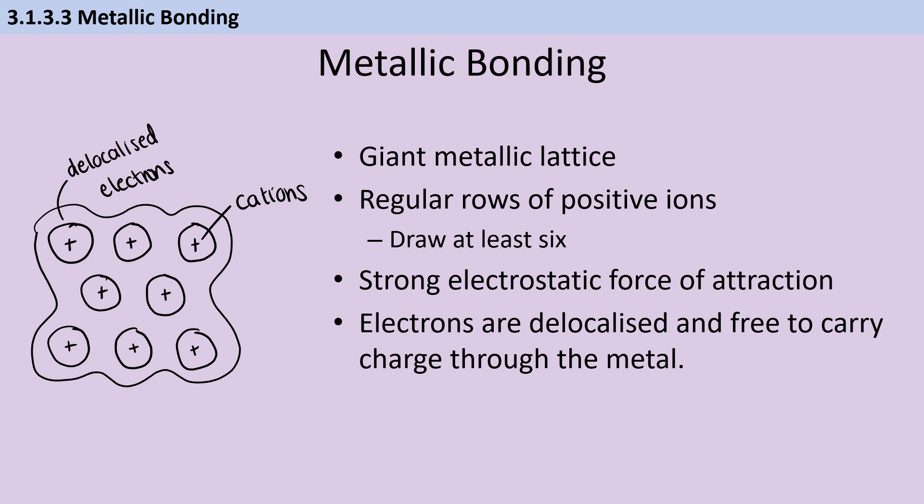Metals consist of a giant metallic lattice, which is made up of regular rows of positive ions and a sea of delocalized electrons. If you're asked to draw this, you should make sure that you're drawing at least six ions. There is a strong electrostatic force of attraction between these positive ions and the delocalized electrons. Metals are able to conduct electricity because the electrons that are delocalized are free to move and carry charge through the metal.